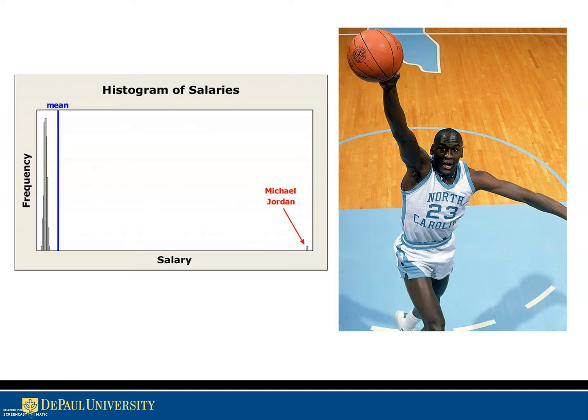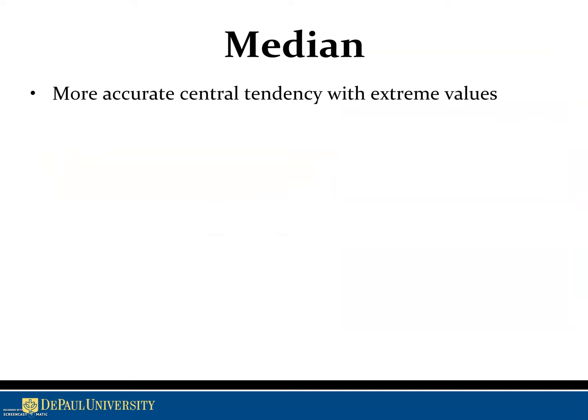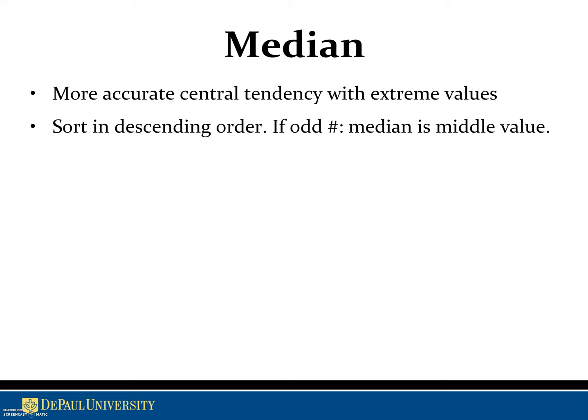Median is more accurate with extreme values. You sort all the values in descending order — and in a spreadsheet it's easy to do this with a command. If there's an odd number of values, you use the middle value; if there's an even number, you use the average of the two closest to the middle.